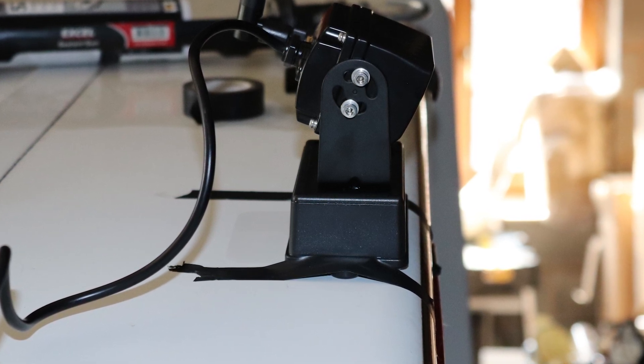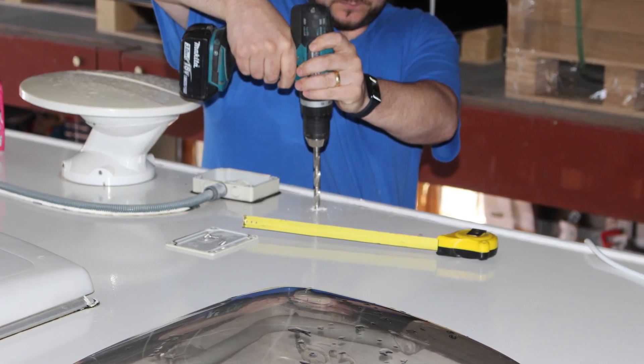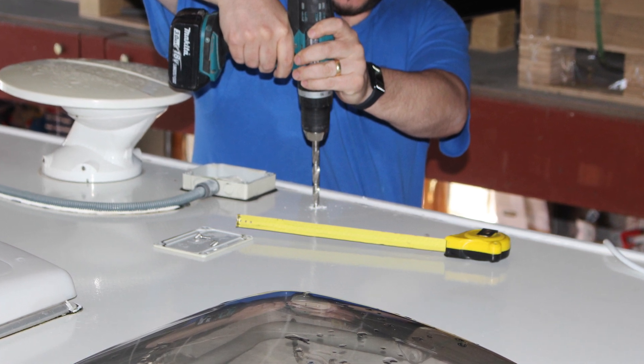Consider the best location to run the power cable to the battery. Figure out your easiest access to the desired location and drill a 3mm pilot hole, followed by a 12mm hole in its place.